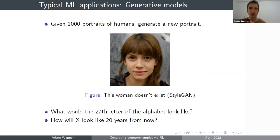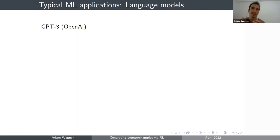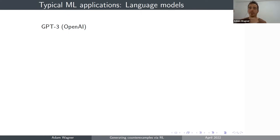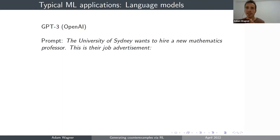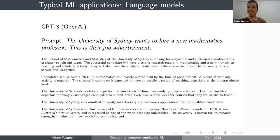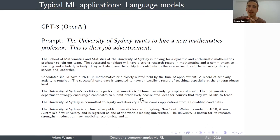A fourth very different application is language models. I want to mention one particular program called GPT-3. It works as a prompt-completion program — you can input a prompt like 'I want to apply for a PhD, please write me a teaching statement,' and it will output one. Sometimes it's pretty good, sometimes not. You can also input something like 'The University of Sydney wants to hire a new maths professor — here's the job advertisement,' and you get something that mostly looks like a reasonable job description, except for a strange bit in the third paragraph about Sydney's logo involving three men selling cacao.